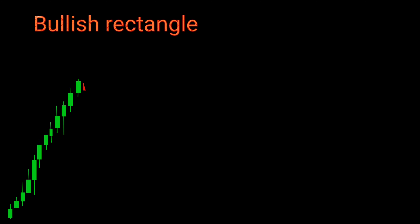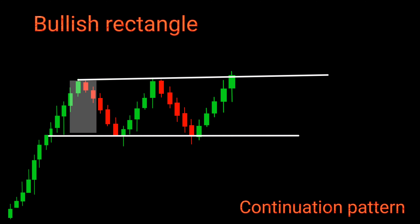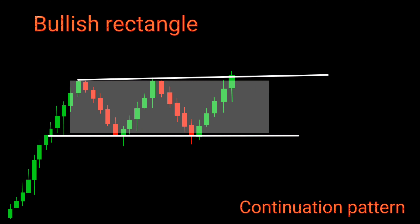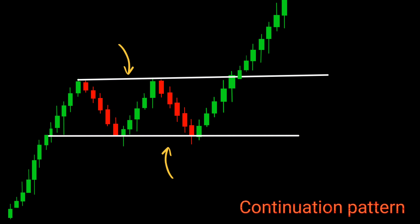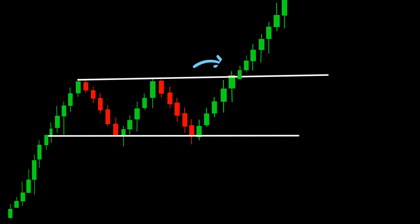The bullish rectangle is a continuation pattern that indicates a temporary consolidation phase before the resumption of an uptrend. Traders often identify this pattern when the price fluctuates within a horizontal range, forming parallel support and resistance lines. Once the price breaks above the resistance line, it confirms a bullish signal, suggesting the uptrend will likely continue.